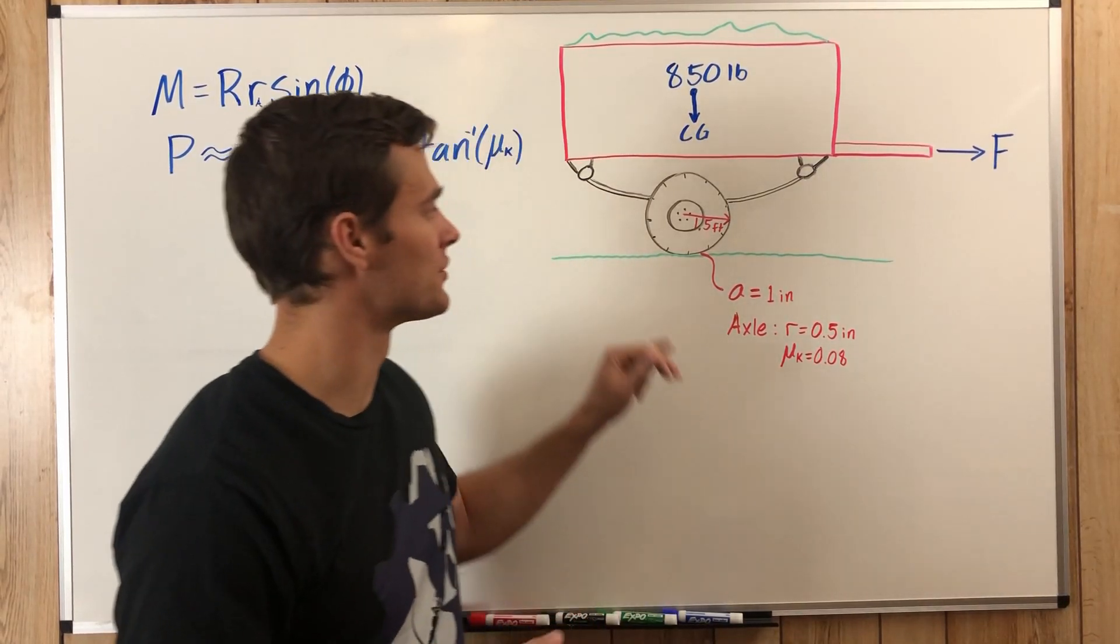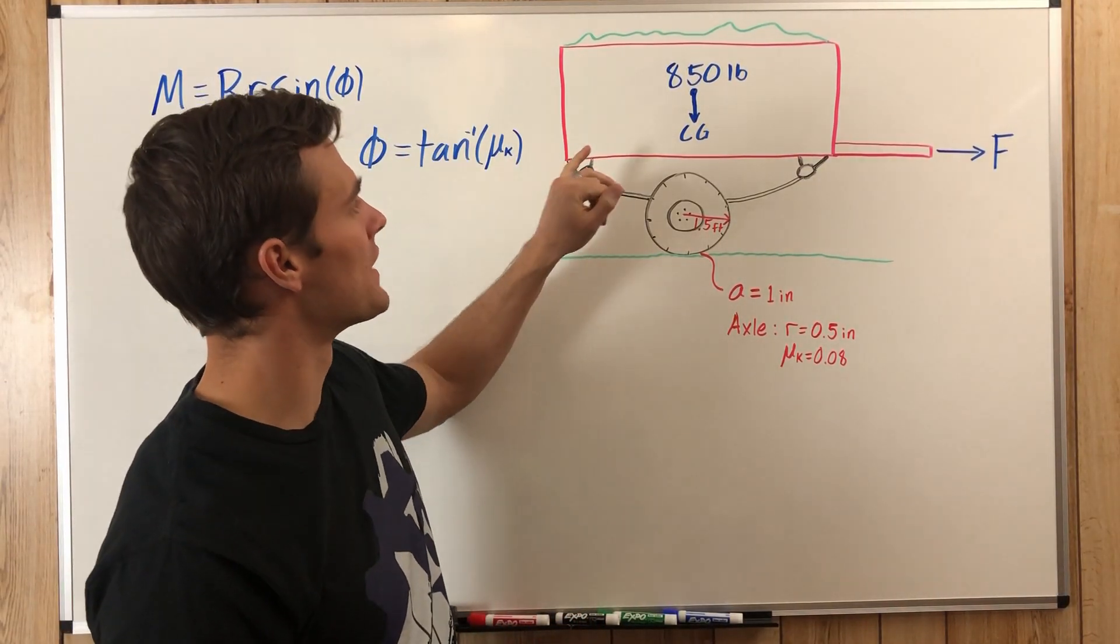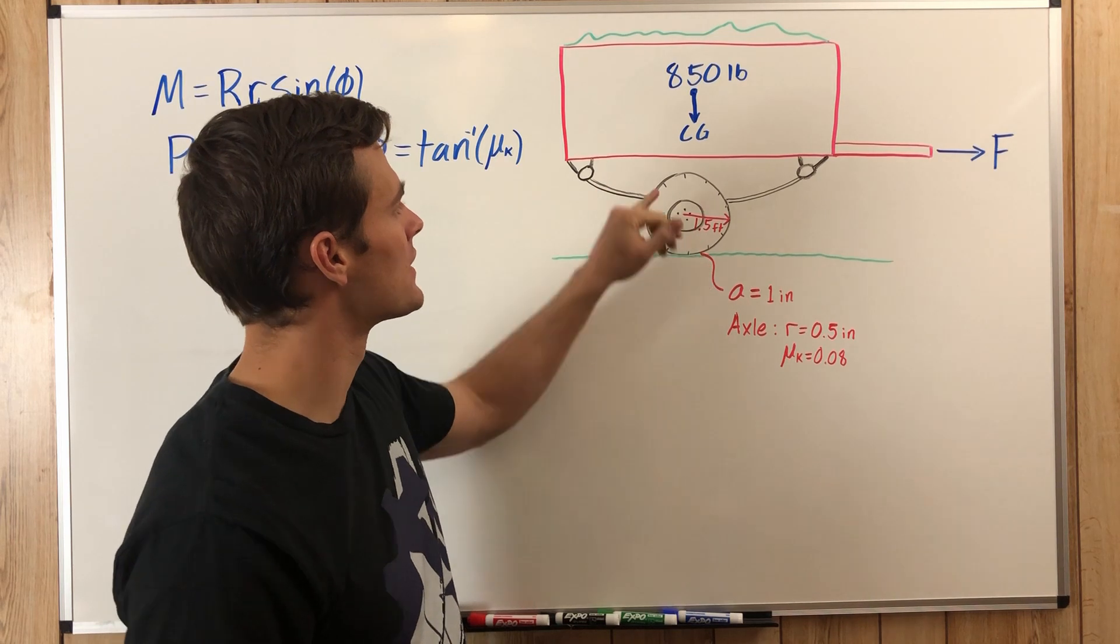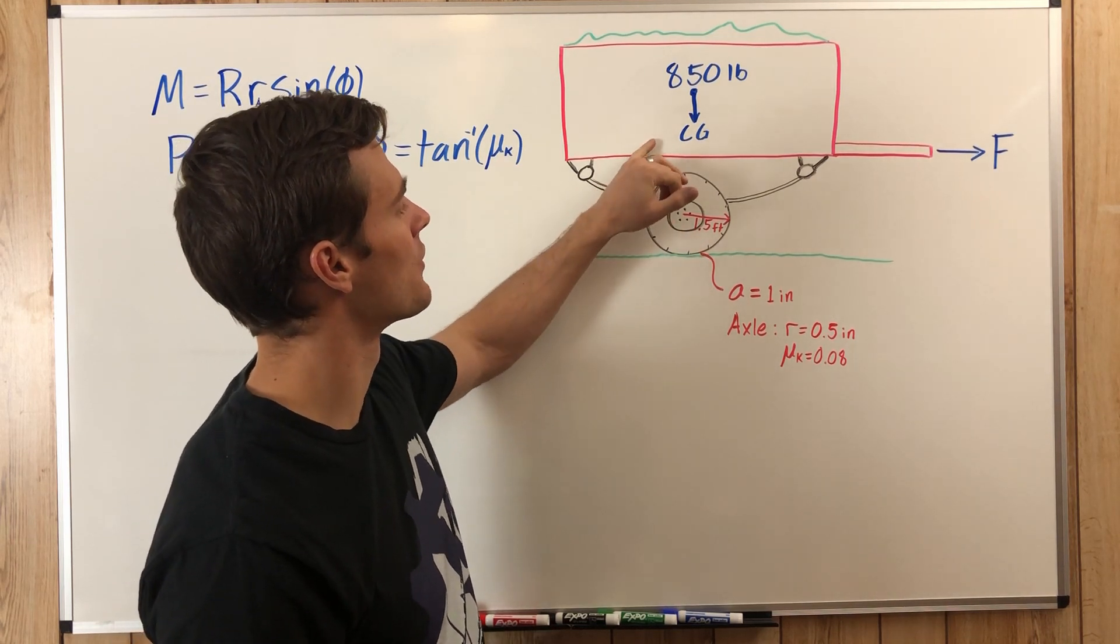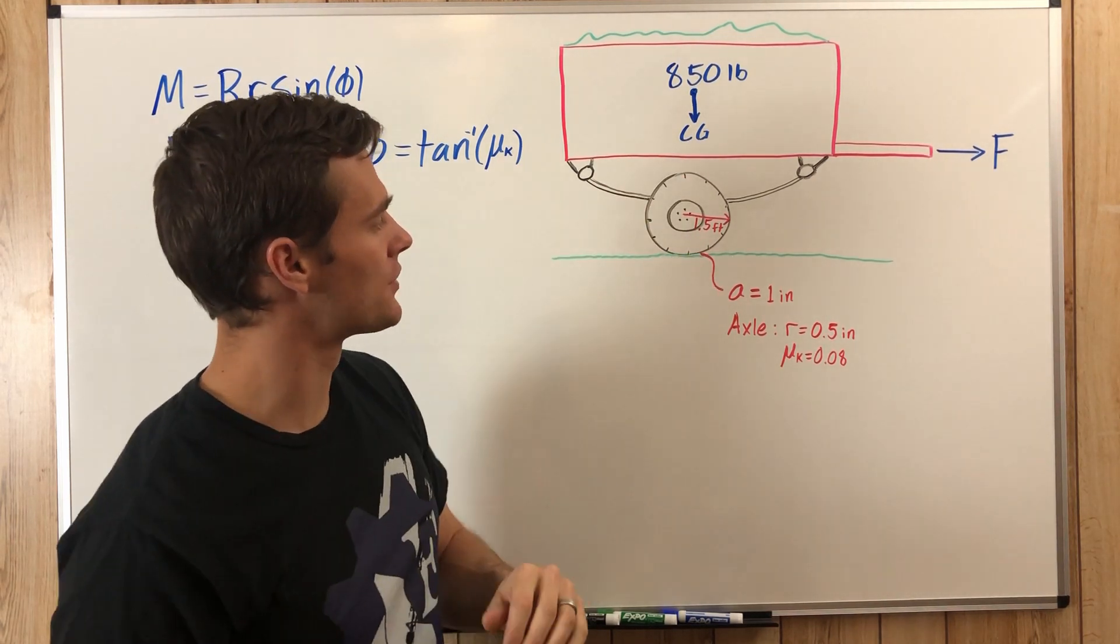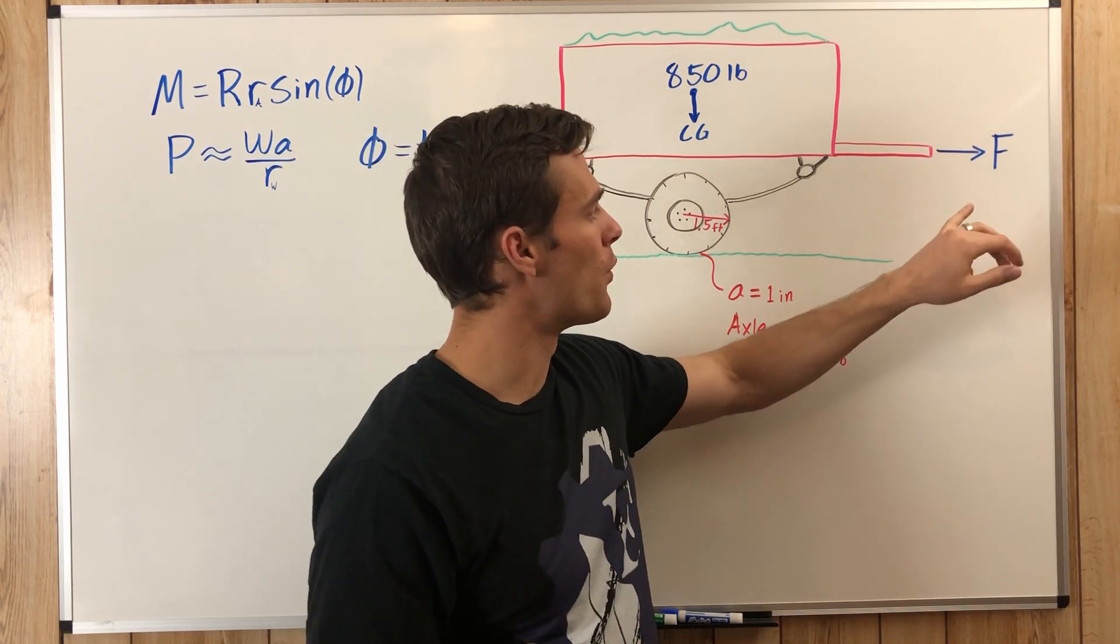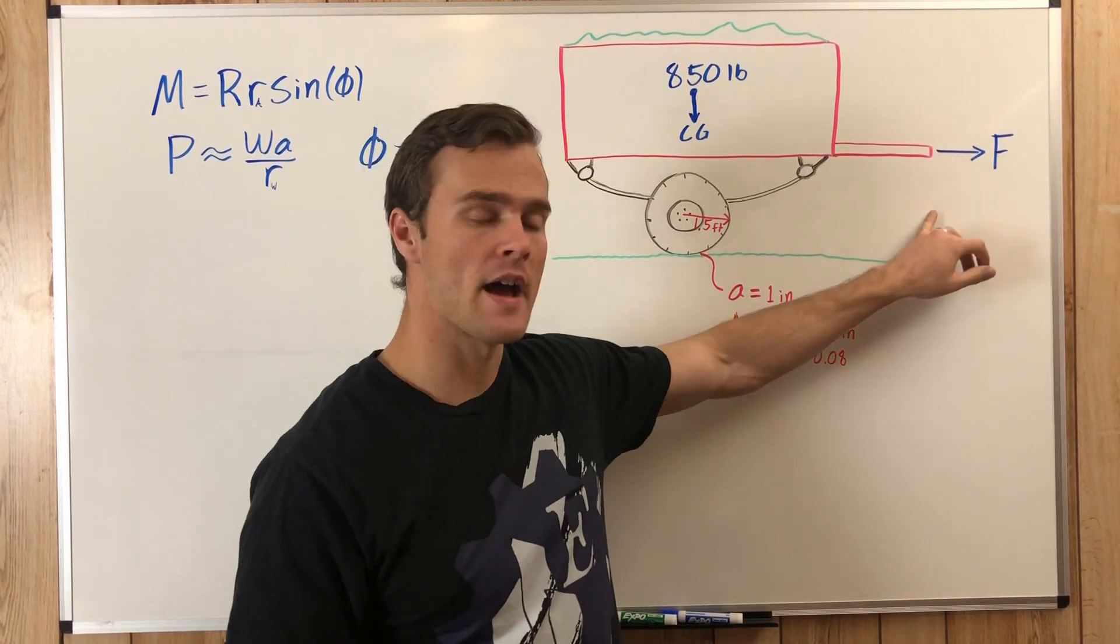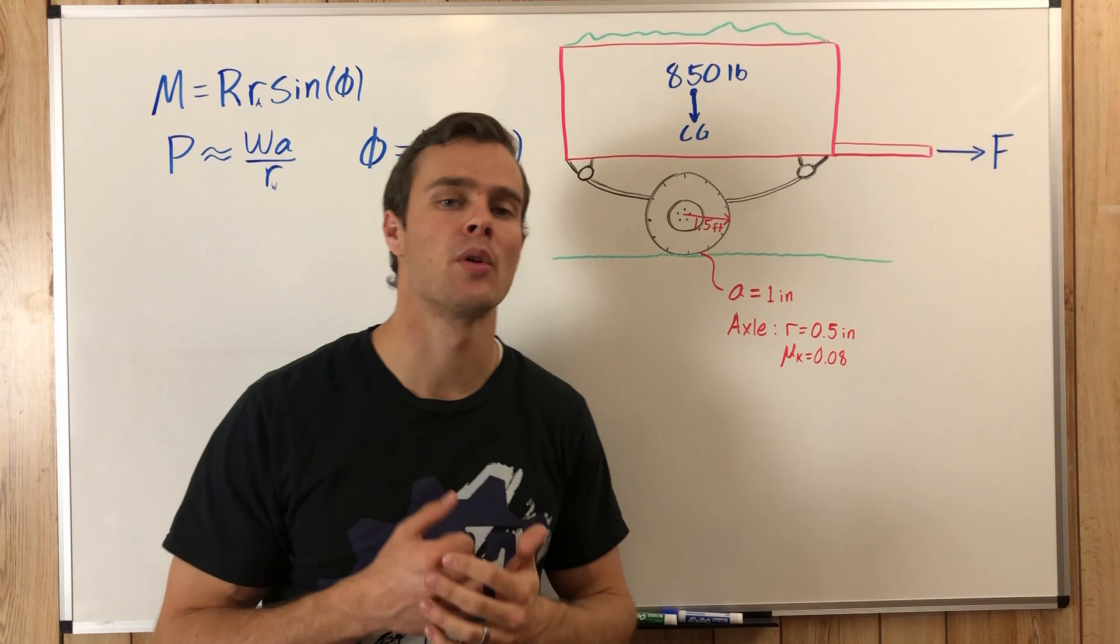Here we have a single axle trailer that weighs 850 pounds, and its center of gravity is acting right over the axle of the wheel. We need to find the force F needed to pull this trailer at a constant speed.